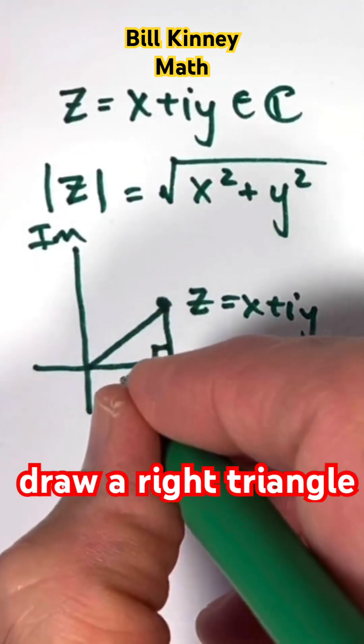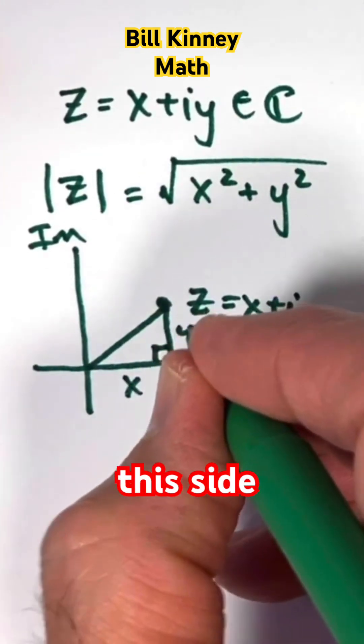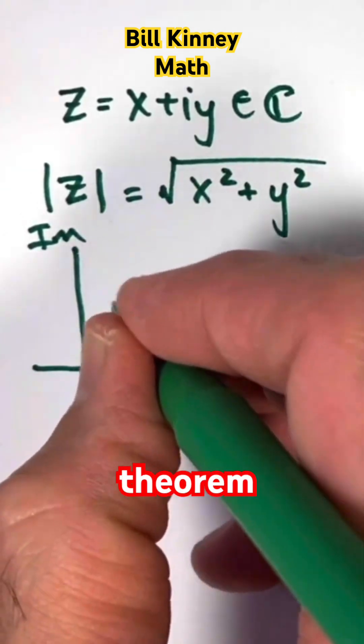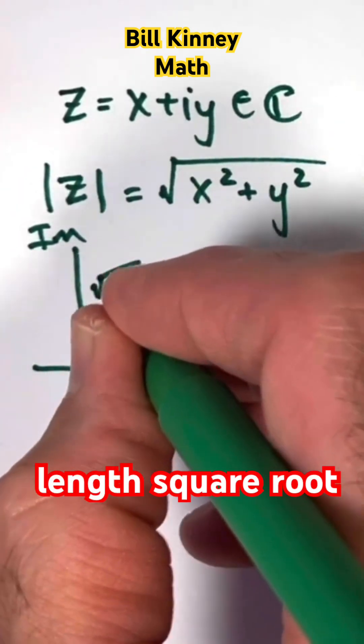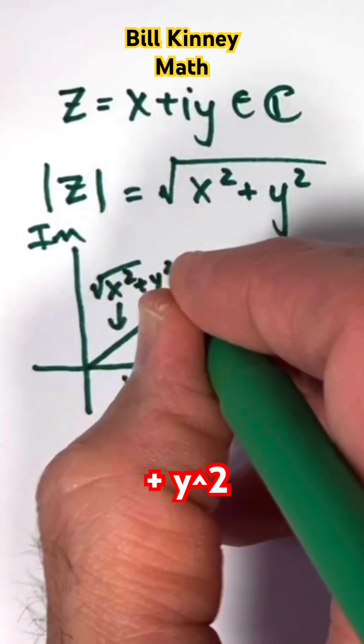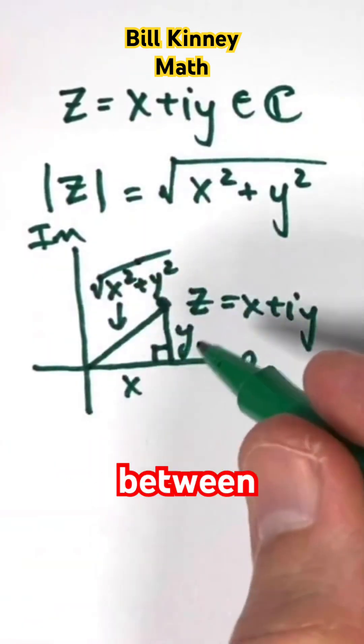Draw a right triangle, label this side x, this side y, and this side by the Pythagorean theorem will have length square root of x squared plus y squared. That will be the distance between z and the origin.